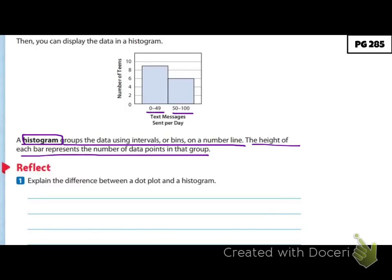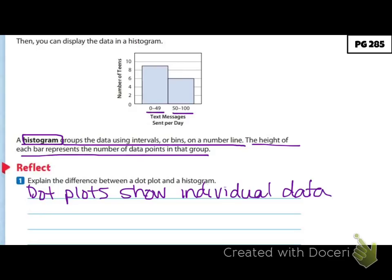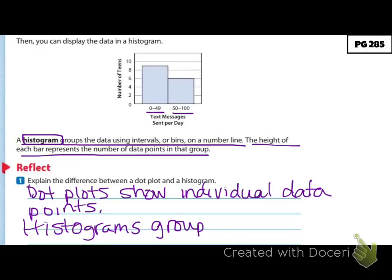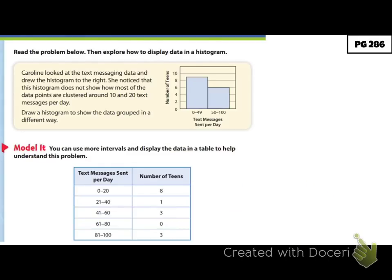Let's reflect: explain the difference between a dot plot and a histogram. Dot plots show individual data points, while histograms group data points together. Caroline looked at the text messaging data and drew a histogram. She noticed that this histogram does not show how most of the data points are clustered around 10 and 20 text messages per day.